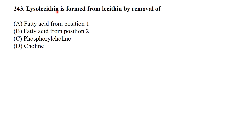Lysolecithin is formed from lecithin by the removal of a fatty acid from the sn-2 position. When the fatty acid is removed from the 2-position of lecithin, lysolecithin is formed.